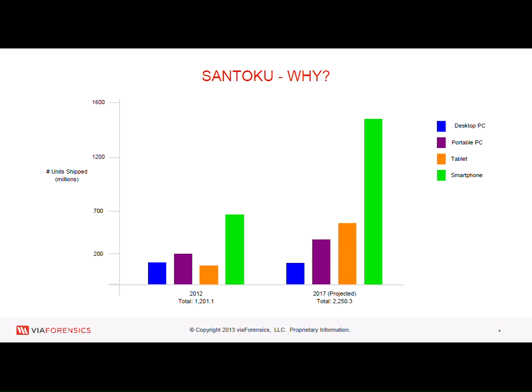If you look forward to 2017, desktops go down a little bit, laptops go up quite a bit. But here's the real growth — you see about triple growth in tablets, maybe up to 700 million. And smartphones are literally off the charts with about 1.5 billion new smartphone and mobile devices to be bought. When you think about the number of mobile apps behind that, you have a tremendous amount of velocity in this market and a lot of challenges around how to secure it.